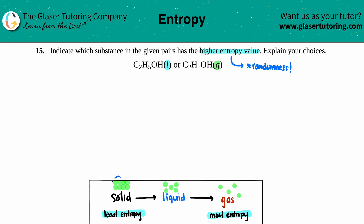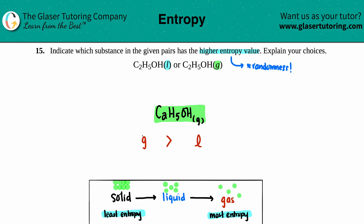Since I have a liquid and a gas, the higher entropy is always the gas. So in this case it would be C₂H₅OH gas. The reasoning is that all gas molecules will always have higher entropy than liquids — gas will always have more entropy than a liquid.